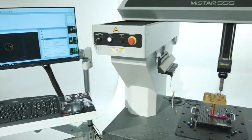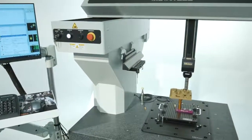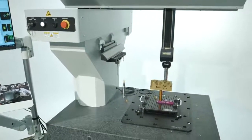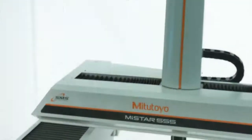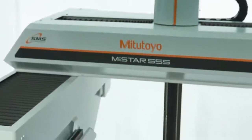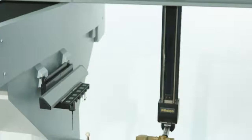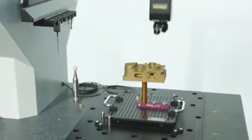Open access on three sides of the MyStar simplifies part loading by an operator or a handling system. The Mitsutoyo proprietary scale system eliminates the need for machine homing, providing instant operation readiness at startup.